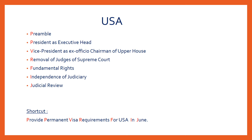The shortcut to remember these features is 'provide permanent visa requirements for USA in June' — concentrate on the highlighted letters: P in 'provide' for preamble, P in 'permit' for president as executive head, V in 'visa' for vice president as ex-officio chairman of the upper house, R in 'requirements' for removal of judges of the supreme court, F for fundamental rights, I in 'for' for independence of judiciary, and J in 'June' for judicial review.